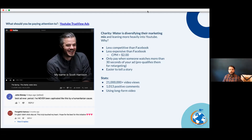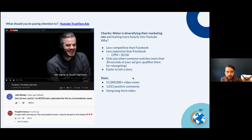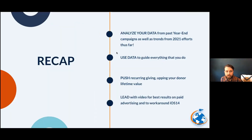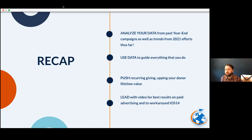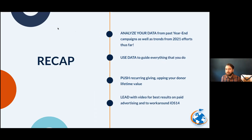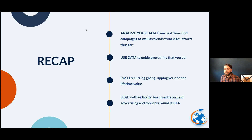Quick recap: Tip one — analyze your data from past year-end campaigns. Use data to guide everything. Make sure you're pushing recurring giving, and if you don't have a program, try to build one even if it's a light recurring giving program. Lead with video for best results on paid advertising and to work around iOS 14.